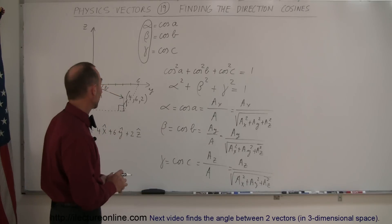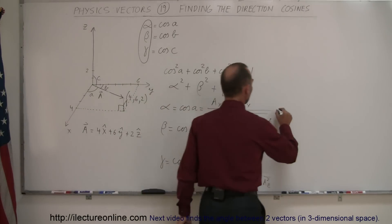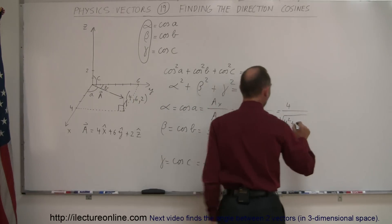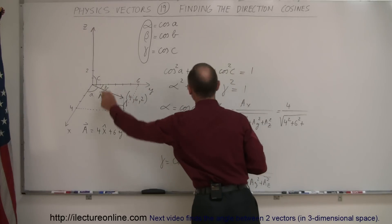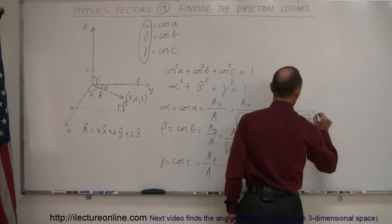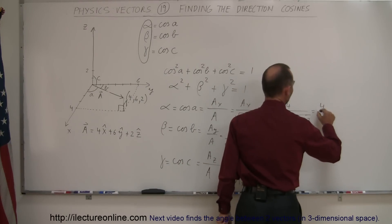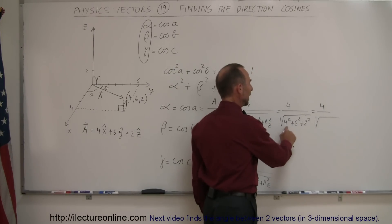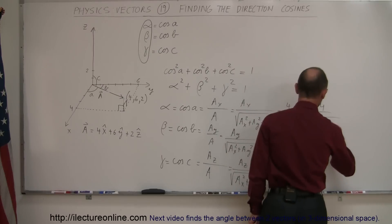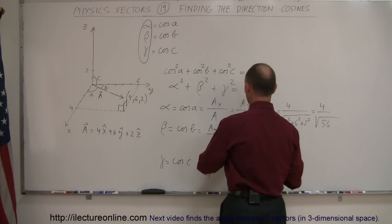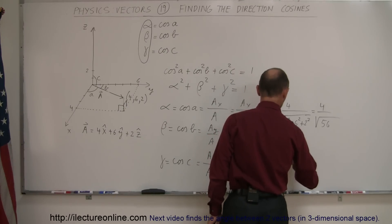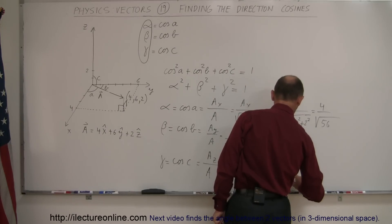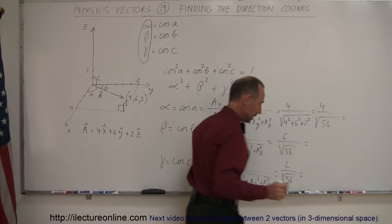Now let's plug in the numbers. A_x is 4, so alpha equals 4 divided by the square root of 4 squared plus 6 squared plus 2 squared. That gives us 4 divided by the square root of 16 plus 36 plus 4, which is the square root of 56. Beta would be A_y, which is 6 divided by the square root of 56, and for A_z, gamma would be 2 divided by the square root of 56.